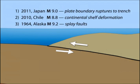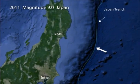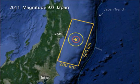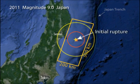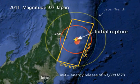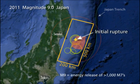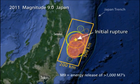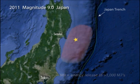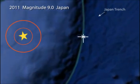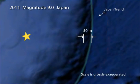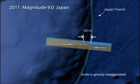Let's explore different tsunami-producing mechanisms by examining three famous earthquakes. In 2011, the magnitude 9 Japan earthquake ruptured a fault area 500 kilometers long by 200 kilometers wide, over an interval of nearly three minutes. Surveys of seafloor bathymetry before and after the earthquake document up to 50 meters of fault displacement at the Japan Trench.